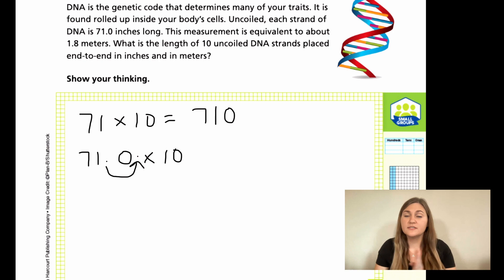The reason you move the decimal to the right is because all the numbers shift to the left and become a bigger place value. So the seven that was in the tens place is now in the hundreds place. The one that was in the ones place is now in the tens place. And the zero that was in the tenths place is now in the ones place. By moving the decimal, you shift all of the digits into the bigger next place value.